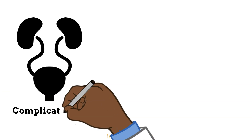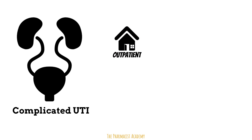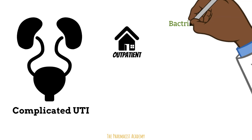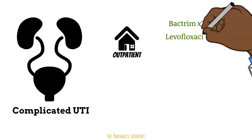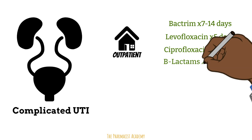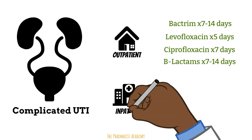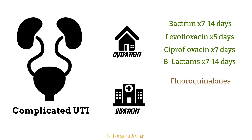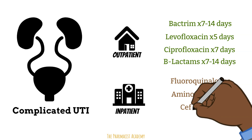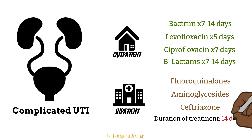For patients with complicated UTIs who are stable, outpatient treatment options include Bactrim for seven to 14 days, levofloxacin for five days, ciprofloxacin for seven days, or beta-lactams for seven to 14 days. For patients with more severe disease who are admitted, options include fluoroquinolones, aminoglycosides, and ceftriaxone, with treatment lasting 14 days.